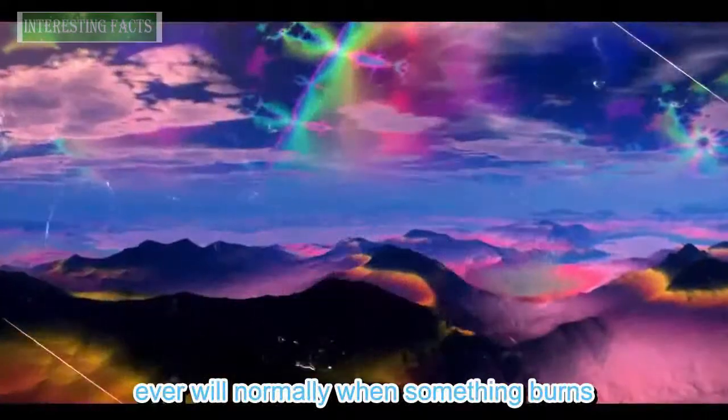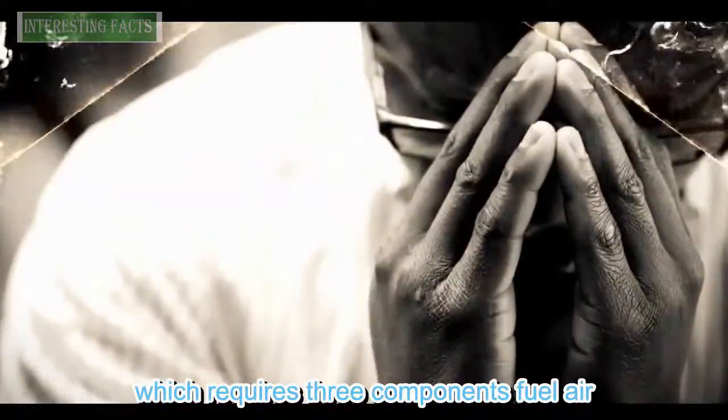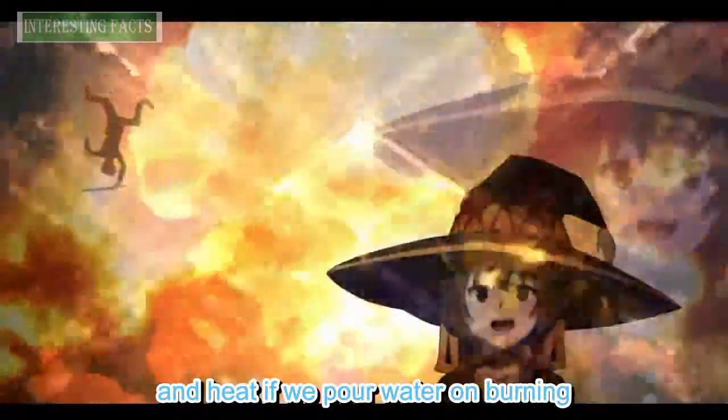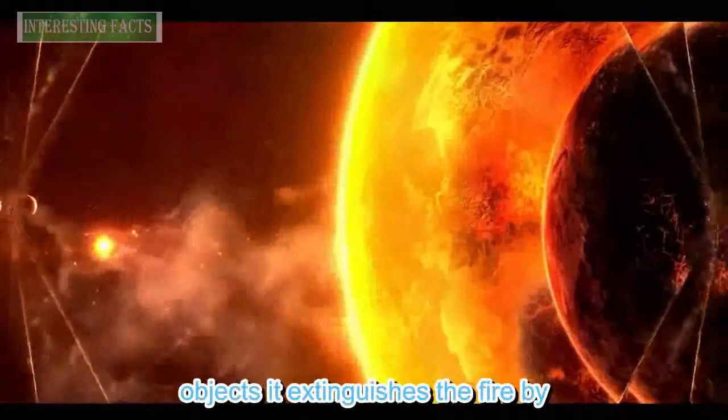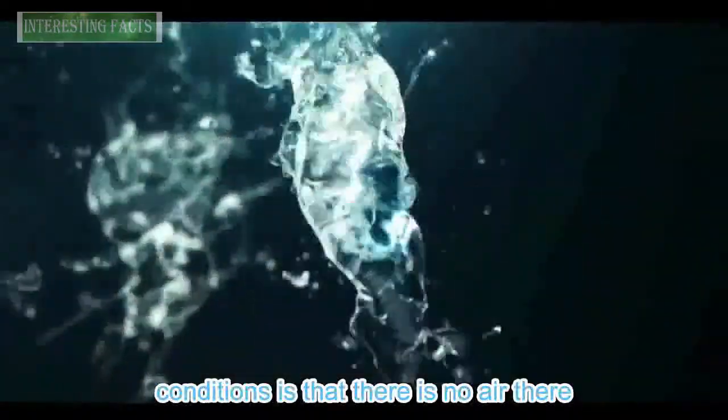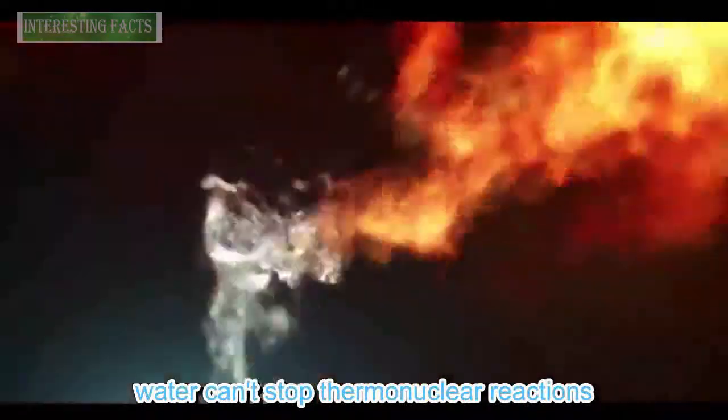Normally when something burns on earth, it burns through combustion which requires three components: fuel, air, and heat. If we pour water on burning objects, it extinguishes the fire by forming a coat of water on top of the fuel. But what is different about space conditions is that there is no air there. Water can't stop thermonuclear reactions in the sun.